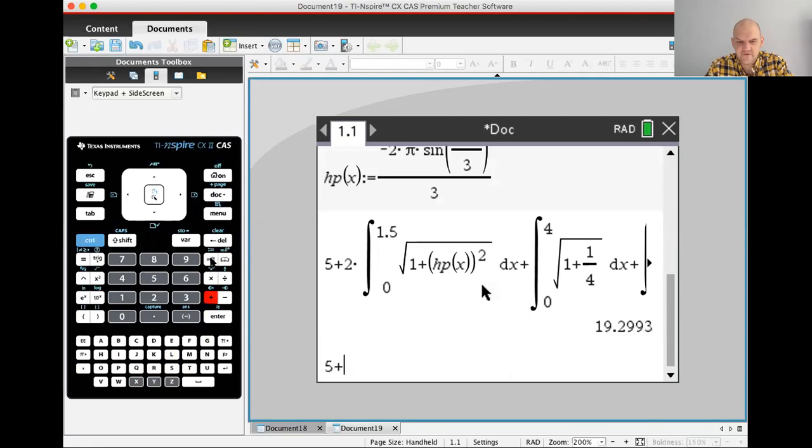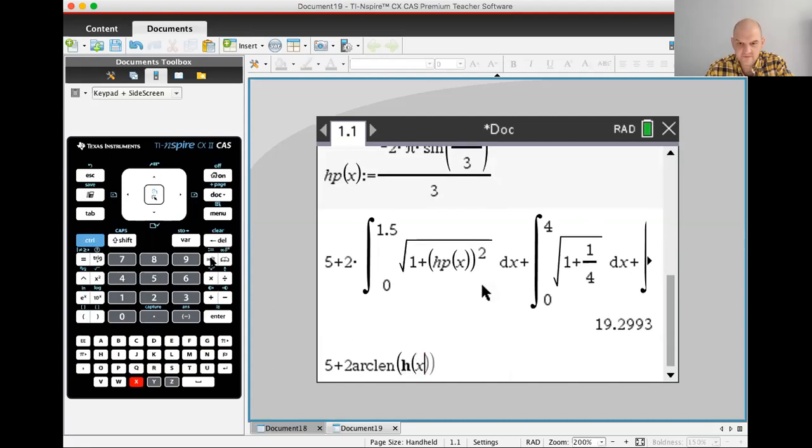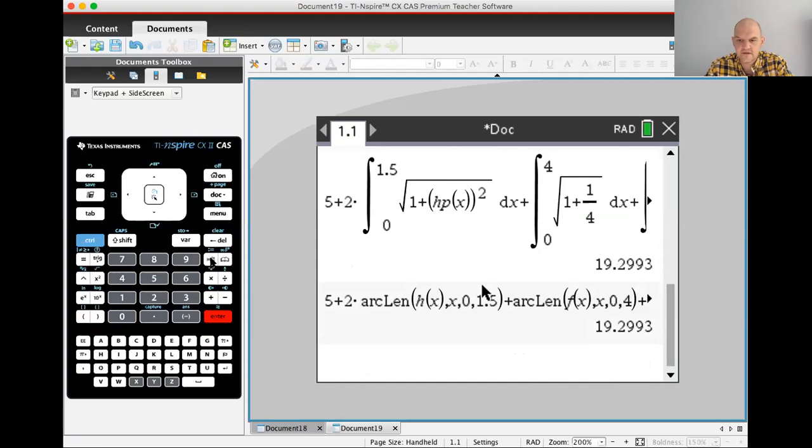Let's see if I do five plus two times the arc length of H of X from zero to 1.5 plus the arc length of F of X from zero to four plus arc length of G of X, where X is a variable from four to six. Same answer. So that's good.